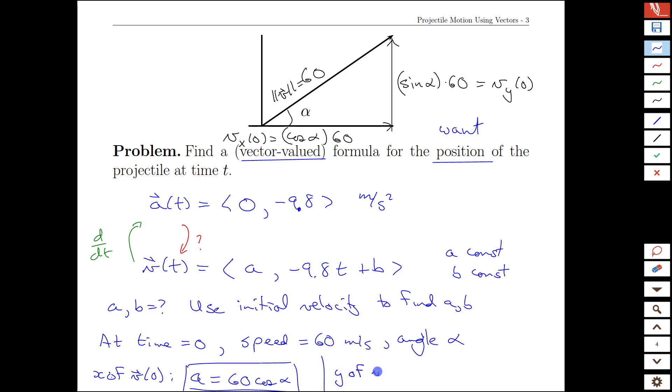At time zero, the y of our velocity at time zero only has to be, here's our velocity, -9.8t, oh, that's zero, plus b. But our initial velocity in the y direction also has to be 60 sin(alpha). And so we know exactly the value of a, the value of b, which means we know our velocity perfectly.